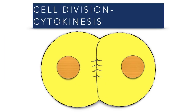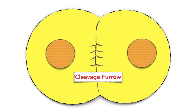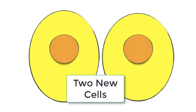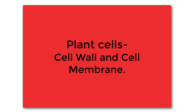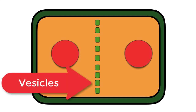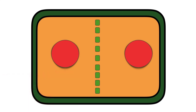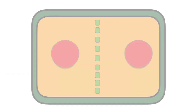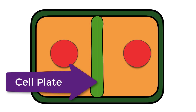Cell division or cytokinesis follows mitosis. This is where the two newly formed nuclei are separated into their own individual cells. In animal cells, the cytoplasm simply pinches — it develops a cleavage furrow and splits into two brand new cells. With plant cells things are more complex because a cell wall must be built. Vesicles containing materials for the new cell walls and cell membranes line up along the equator of the cell, fuse to form a cell plate, and the new cell walls and membranes develop on either side.